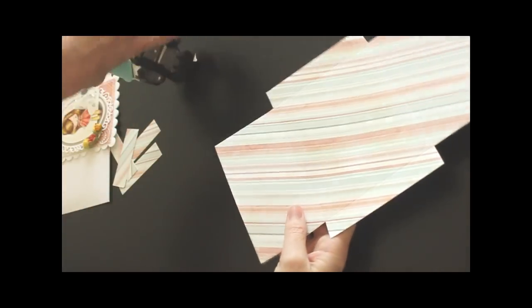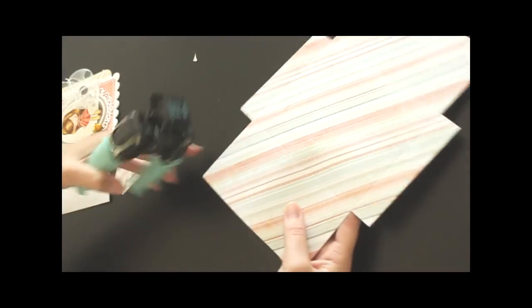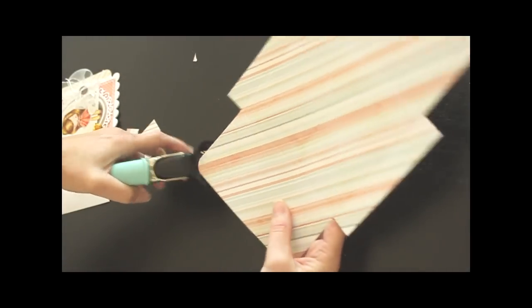All we have left is round the corners, and that's totally optional if you want a straight envelope. That's fine, too. I'm using a corner chomper.